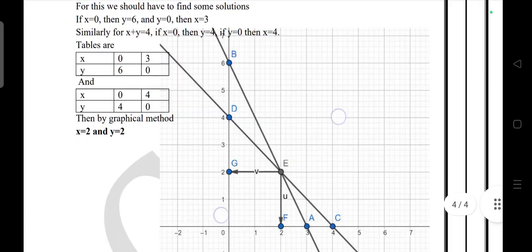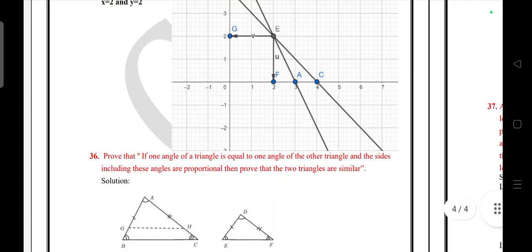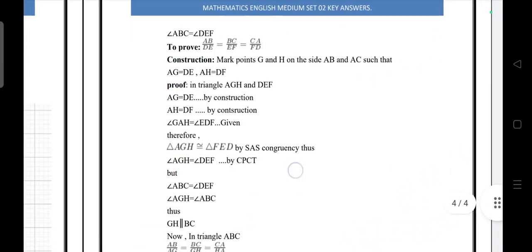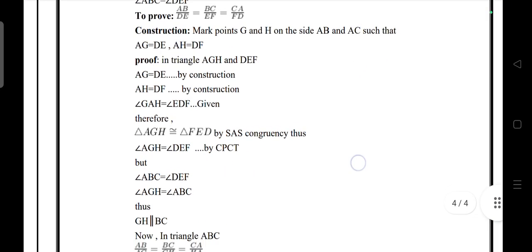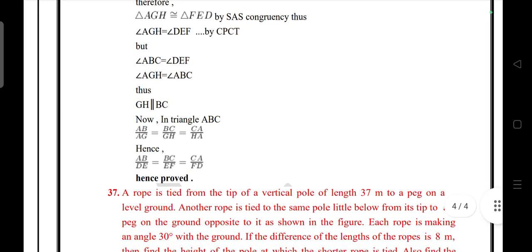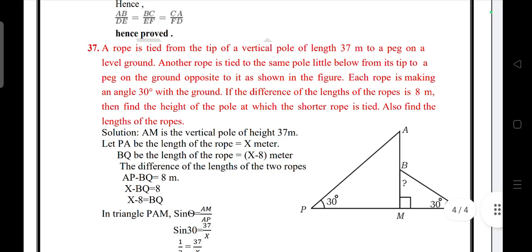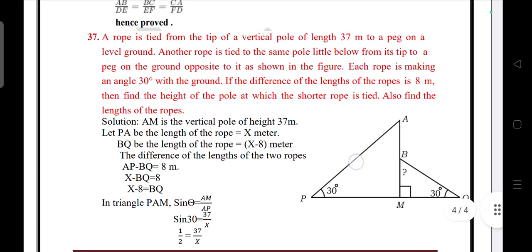Four mark questions. Question 37: Tangent secant theorem. This is from your textbook only. A rope is tied from the tip of a vertical pole of length 37m to a peg on a level ground. Another rope is tied to the same pole little below from its tip to a peg on the ground opposite to it as shown in the figure. Each rope is making angle 30° with the ground. If the difference of the lengths of the ropes is 8 meter, then find the height of the pole at which the shorter rope is tied. Also find the length of the ropes.